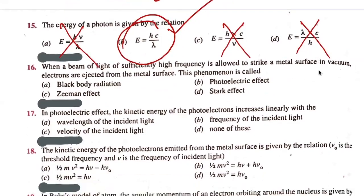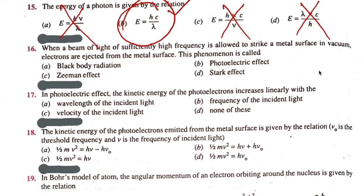When a beam of light of sufficiently high frequency is made to strike a metal surface in vacuum, electrons are ejected from the metal surface. This phenomenon is called the photoelectric effect.